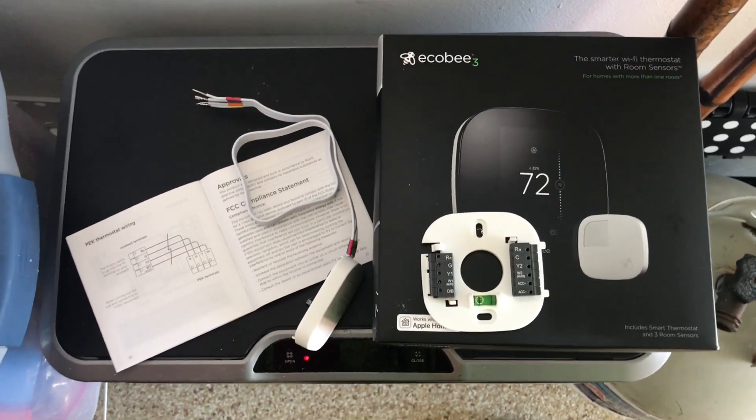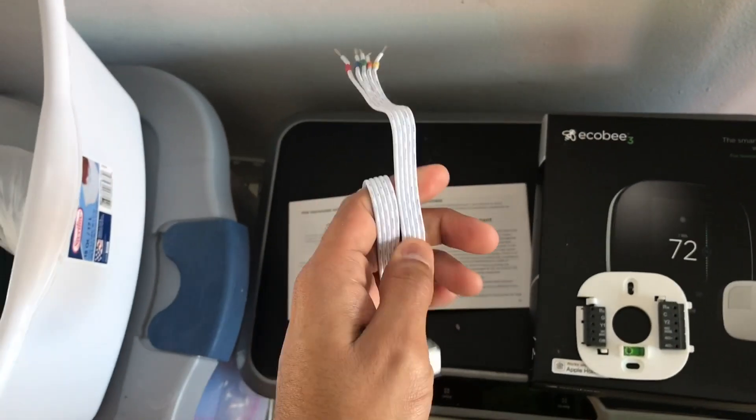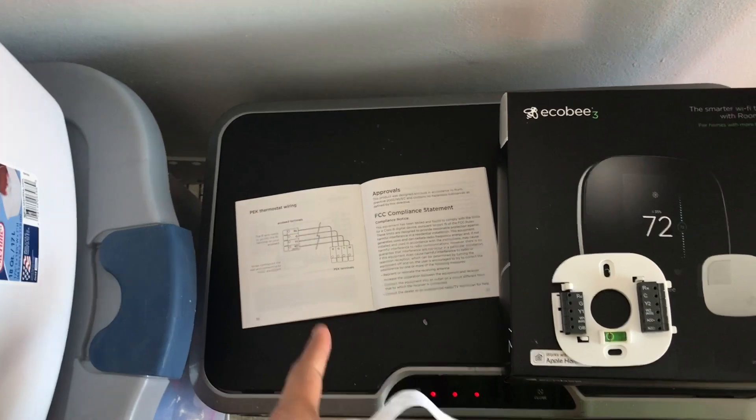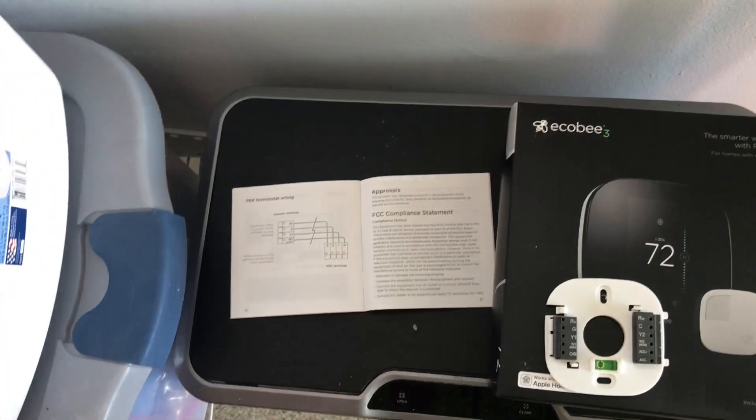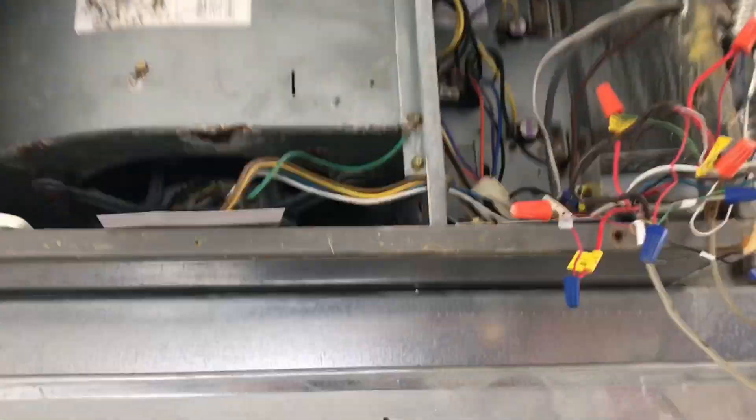Today we're going to install the Ecobee V3 thermostat. This video is for the installation of the PEK adapter. We've got to install this thing to a unit that doesn't have a board. This is a Carrier unit, and as you can see it doesn't have the board that they show you on the schematics.